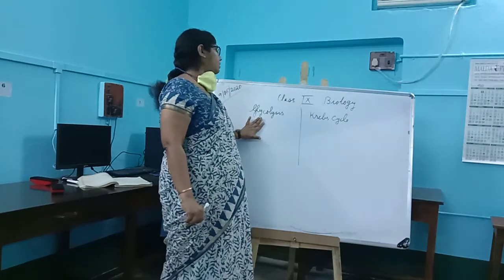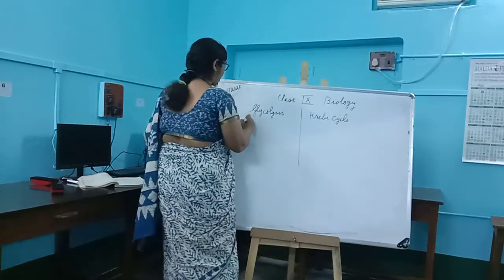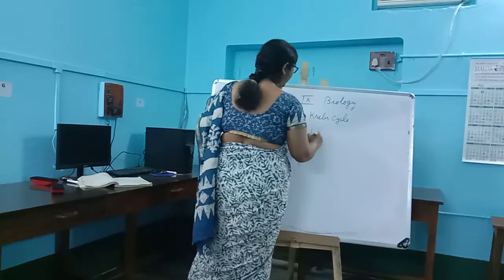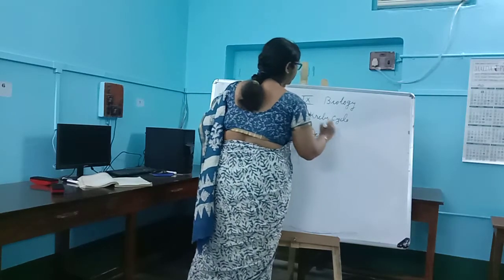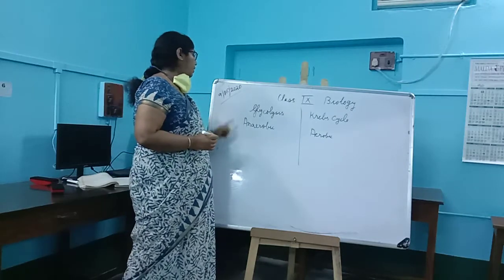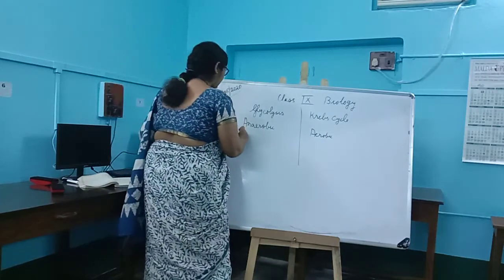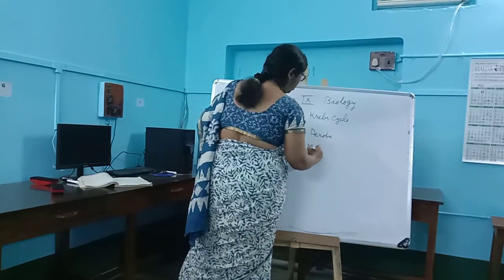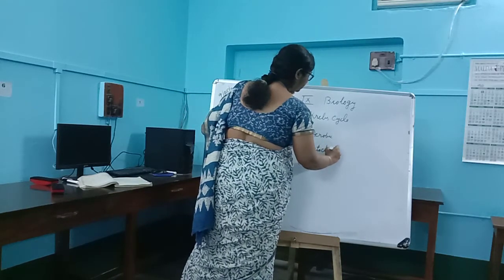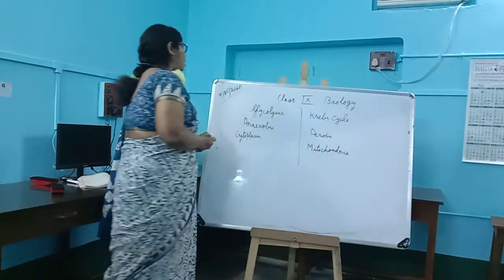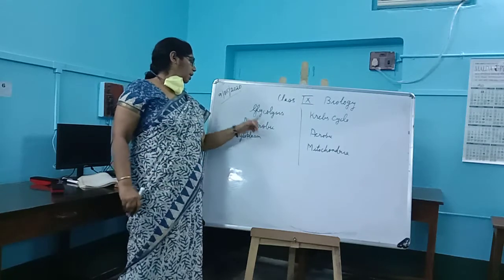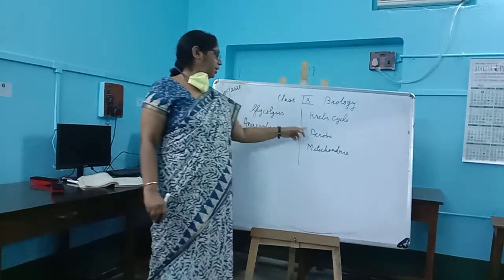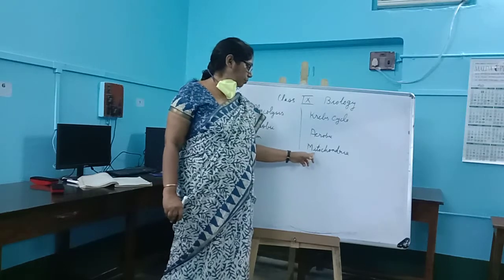Glycolysis is anaerobic in nature — it does not involve oxygen — and it occurs in the cytoplasm of a cell. The Krebs cycle is aerobic in nature, meaning it involves oxygen, and it is performed in the mitochondria. So glycolysis: first phase, anaerobic, cytoplasm. Krebs cycle: second phase, aerobic, mitochondria.